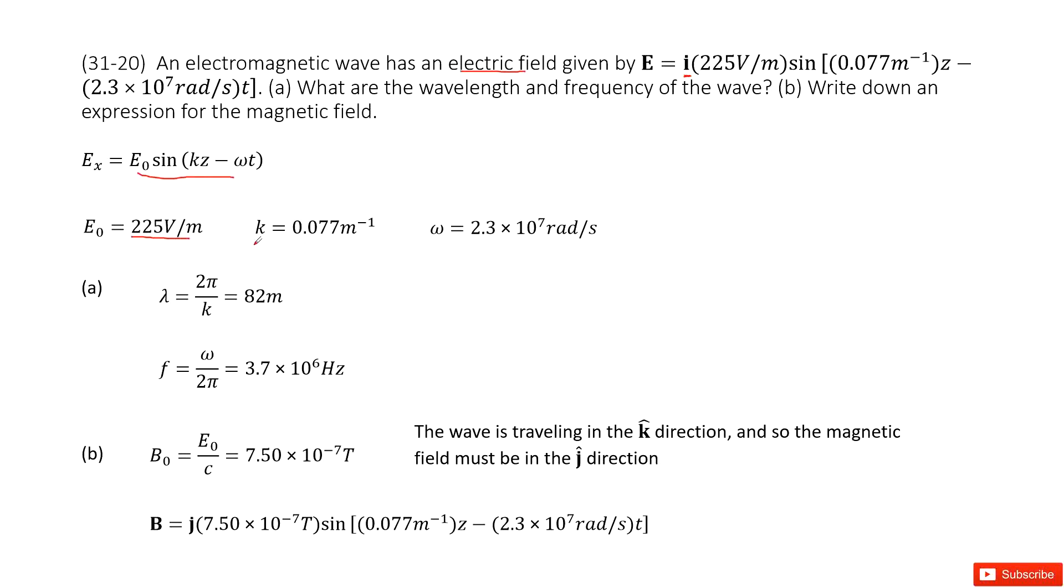And k is the wave number, and then you get the answer there. And the omega as the angular frequency, you can get it there. Now we have three quantities: E naught, k, and omega.